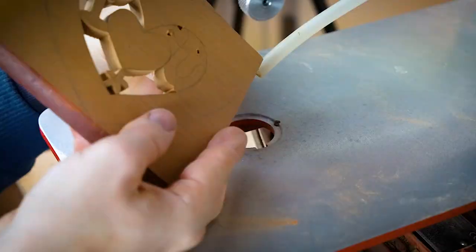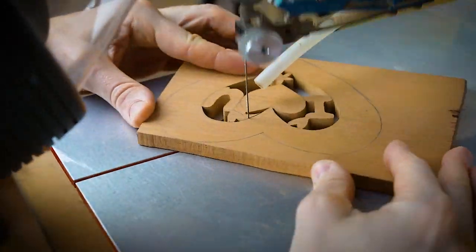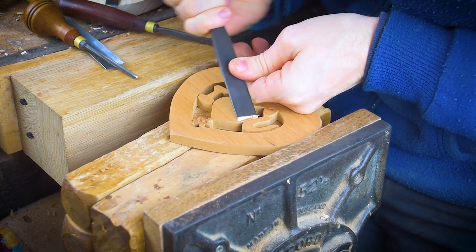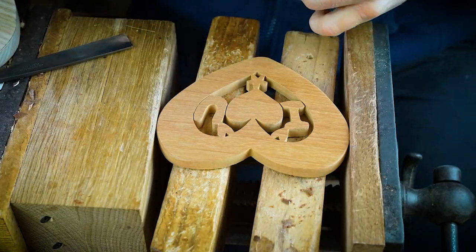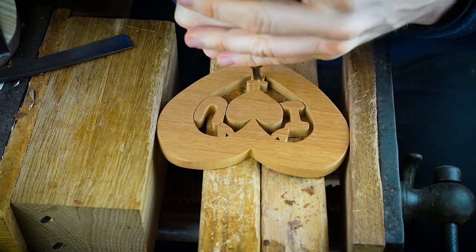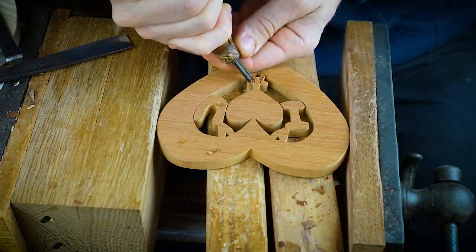Similar to the other processes then, cut out your design, you can then hand carve any details on there. Once you've finished off the hand carving, sand it all down and stick the two pieces together - the background and the front, stick those two halves together.